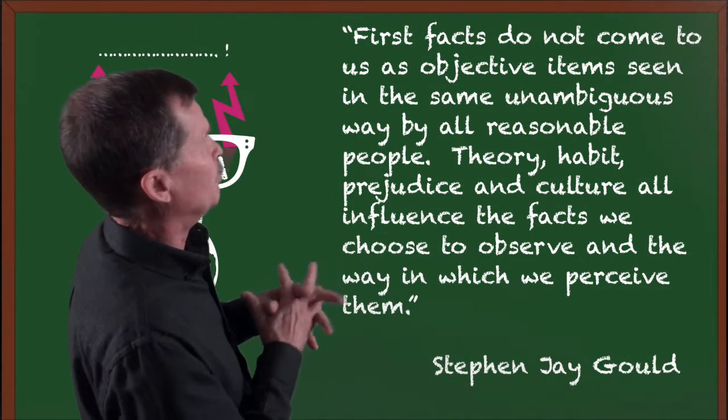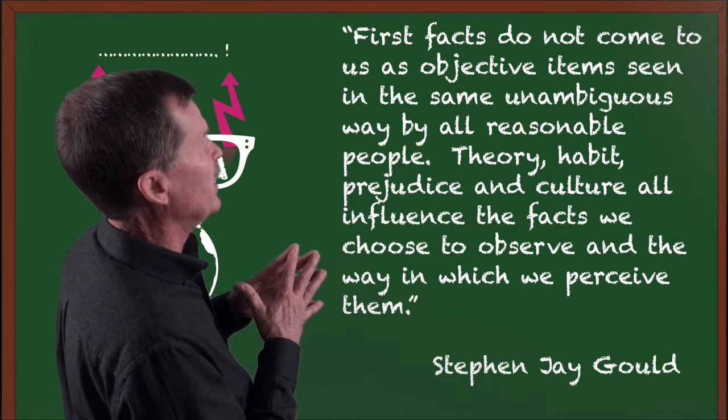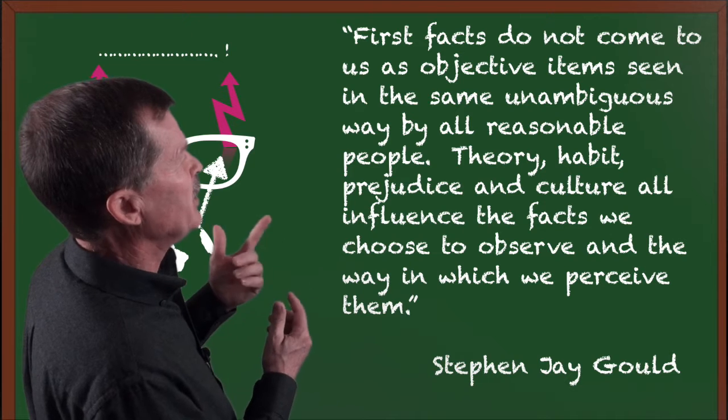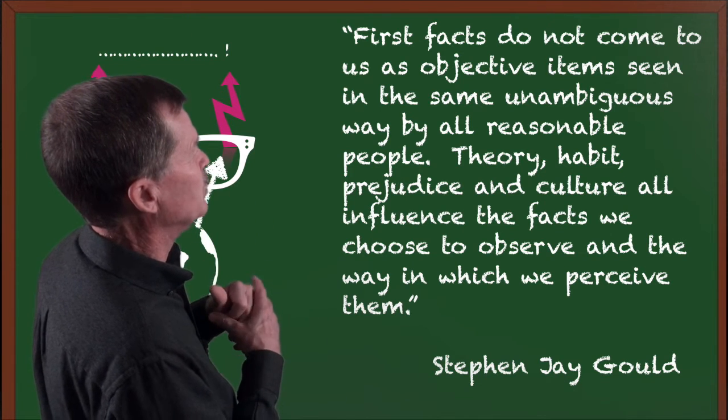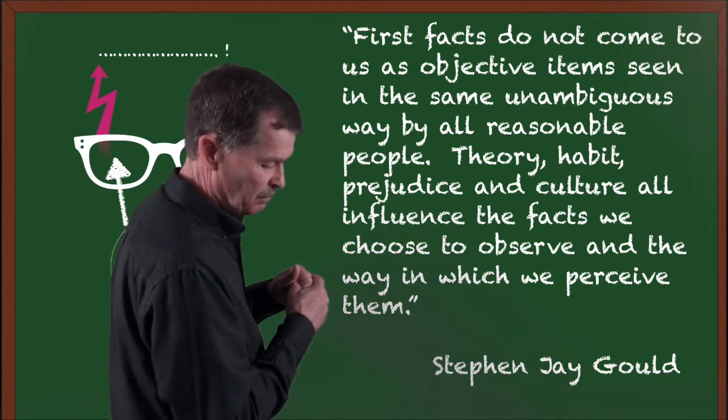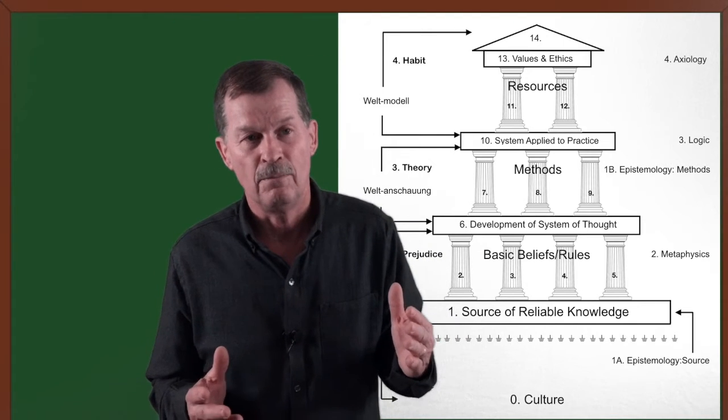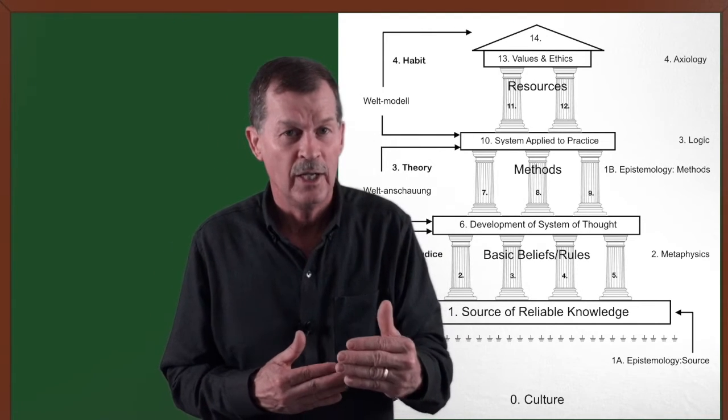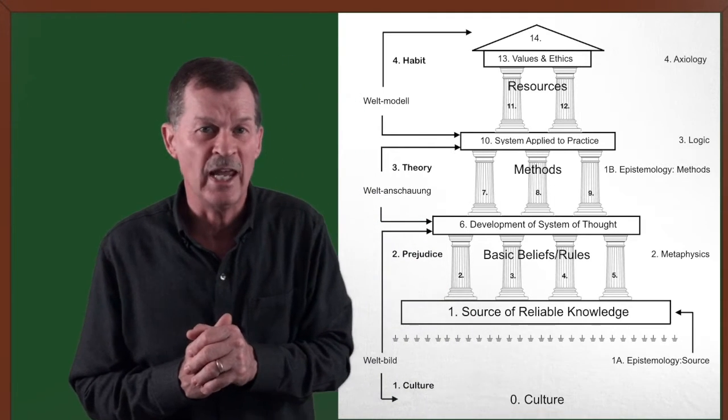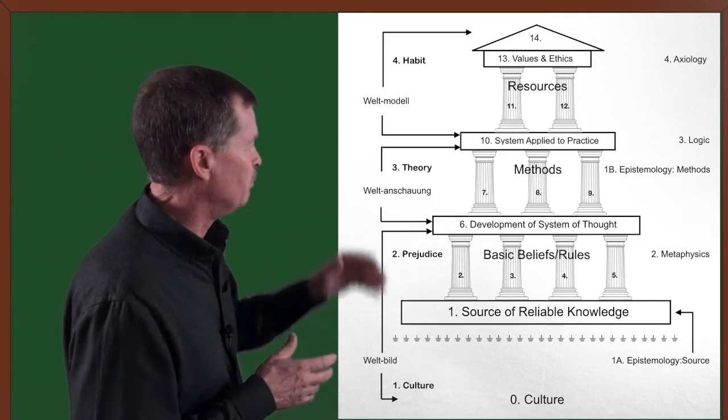Going back to the quote from Stephen Jay Gould: First facts do not come to us as objective items seen in the same unambiguous way by all reasonable people. Theory, habit, prejudice, and culture all influence the facts we choose to observe and the way in which we perceive them. I think you may understand a little bit more about that quote and about the four factors that Stephen Jay Gould mentions and how they influence the perception process.